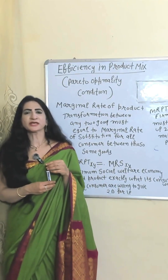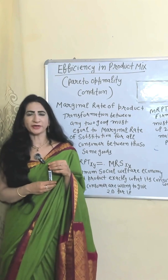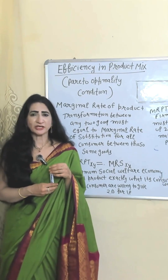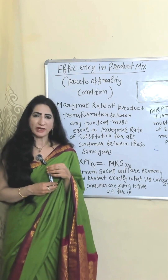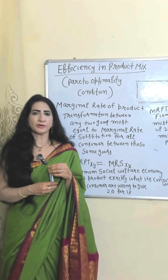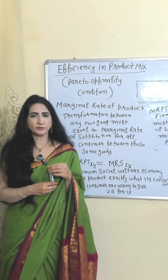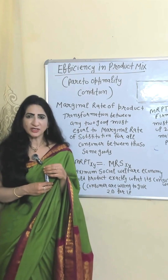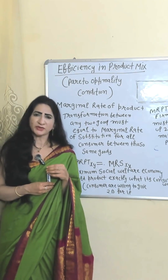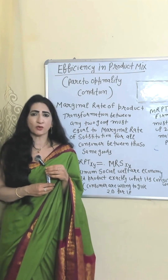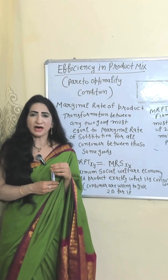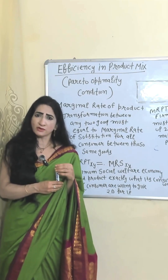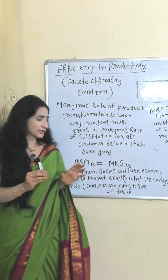Hi. Product Mix Condition of Pareto Optimality. According to this condition, for maximum social welfare, the economy should produce according to the preference of consumers. That means the marginal rate of product transformation between any two goods must equal the marginal rate of substitution for all consumers between those same goods.